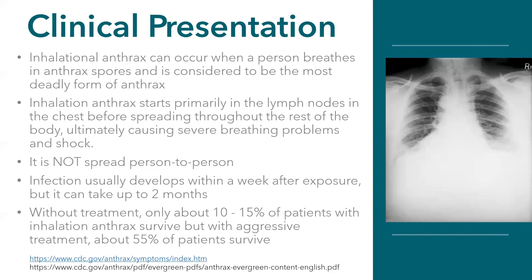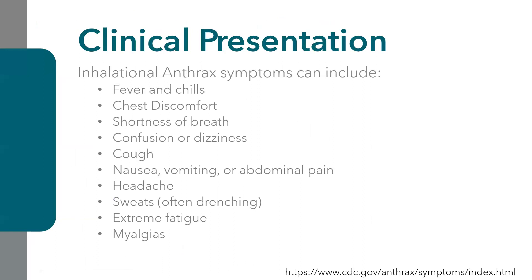One characteristic clue for inhalational anthrax is a widened mediastinum on imaging, though many other non-infectious diagnoses can also cause this. The symptoms can be quite variable and nonspecific — including fever and chills, shortness of breath, cough, headaches, myalgias, and other flu-like symptoms. Drenching sweats are quite prominent. GI symptoms such as abdominal pain, nausea, and vomiting may also occur. A high clinical acumen is required, and taking a good history is essential. In a potential bioterrorism event, individuals may not realize they were exposed, as anthrax is colorless and odorless.